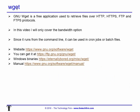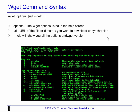Good old WGET — it's a free app. You can retrieve files over HTTP, HTTPS, FTP, and FTPS. In this video I'm only going to cover the bandwidth option under HTTP, just to give you a quick start. Since it runs through the command line, it can be used in cron jobs or batch files. There's the website URL where you can get it — Windows binaries are here and the manual is here. I'll put all that stuff in the write-up so you can copy and paste it into your browser.